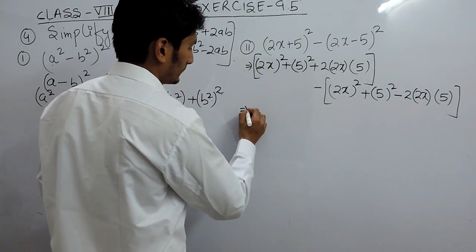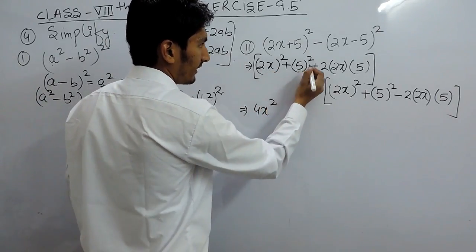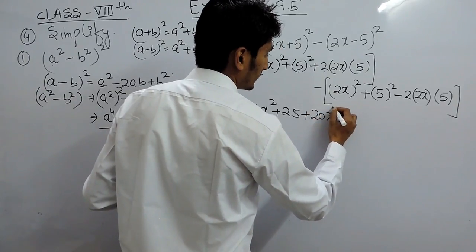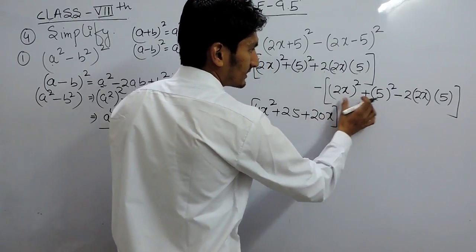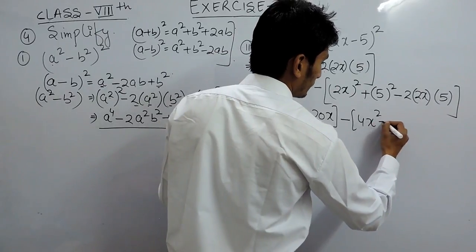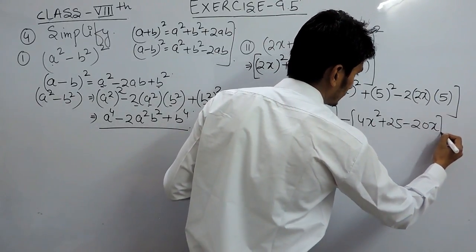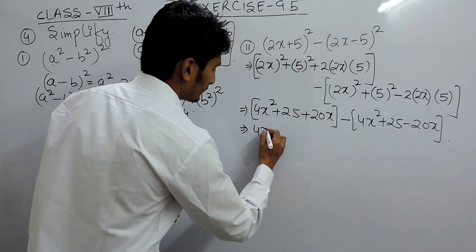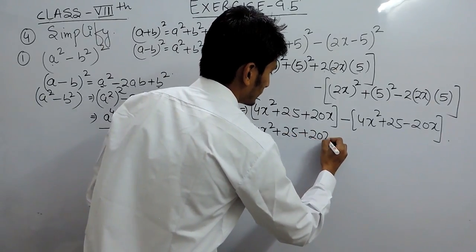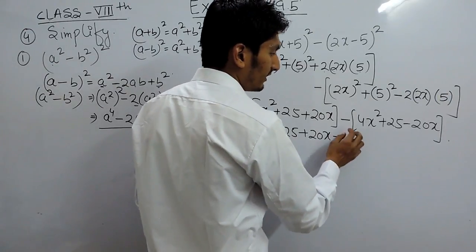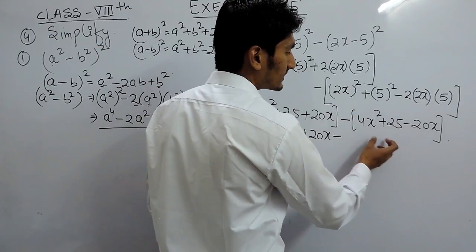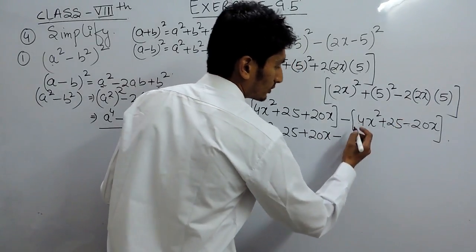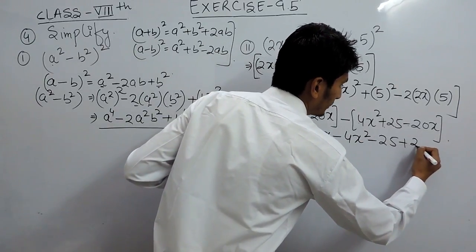Now further solving this: (2x)² is 4x², 5² is 25, and 2 × 2 × 5 = 20, so this is 20x. Minus — the second bracket remains: 4x² + 25 − 20x. Now opening the bracket, whenever there is a negative sign outside the bracket we change all signs inside. So positive becomes negative, positive becomes negative, and negative becomes positive — giving minus 25 and plus 20x.